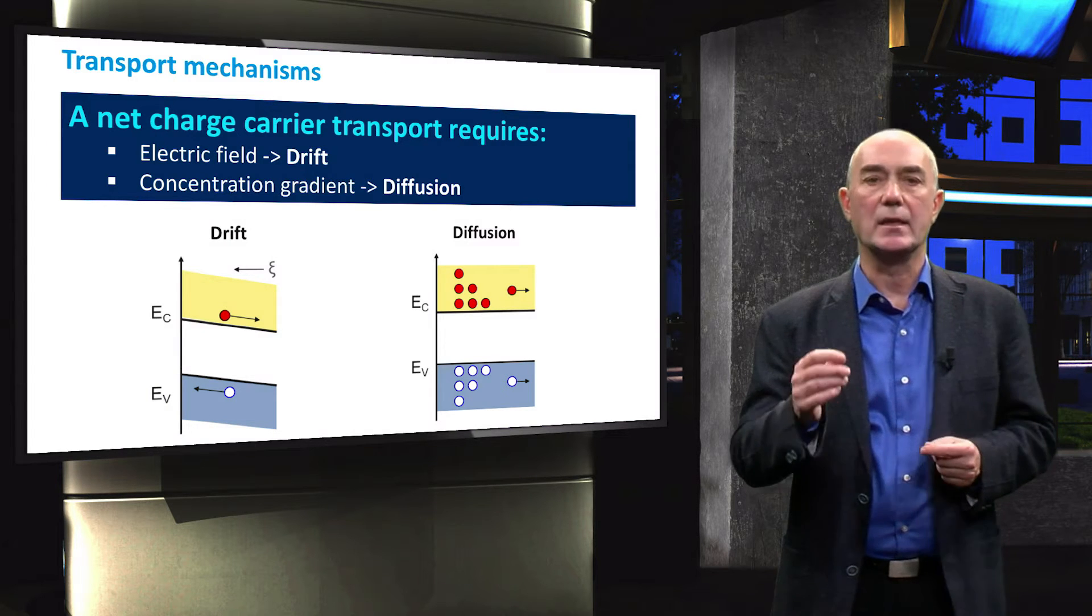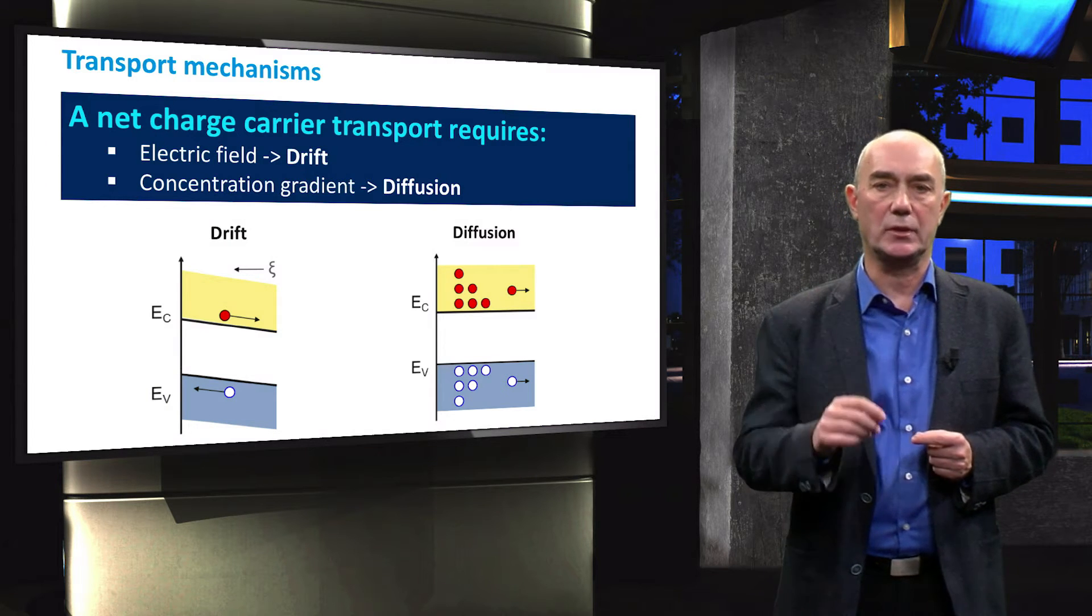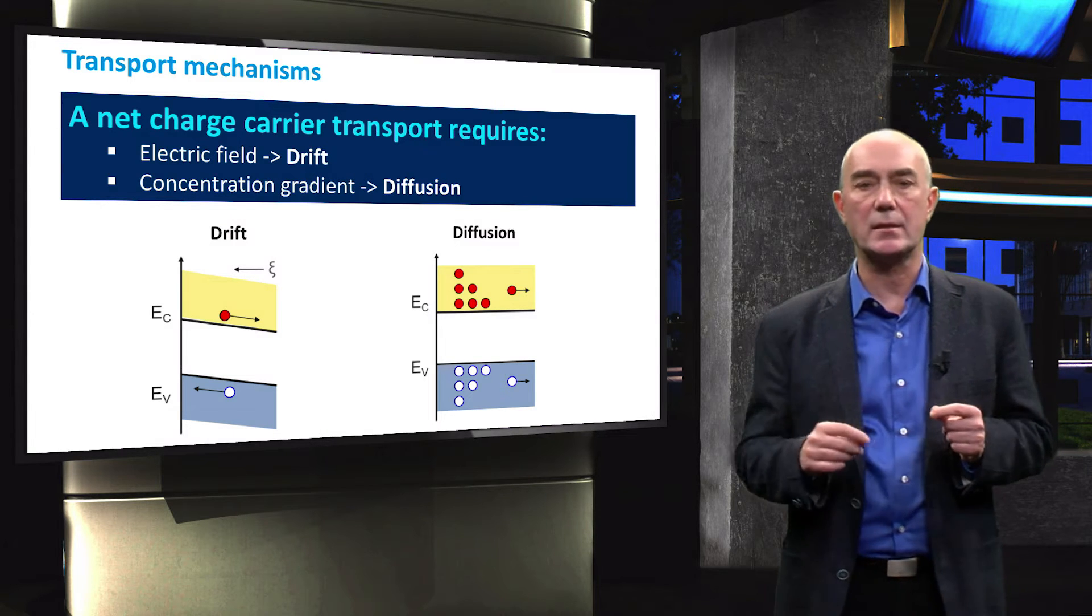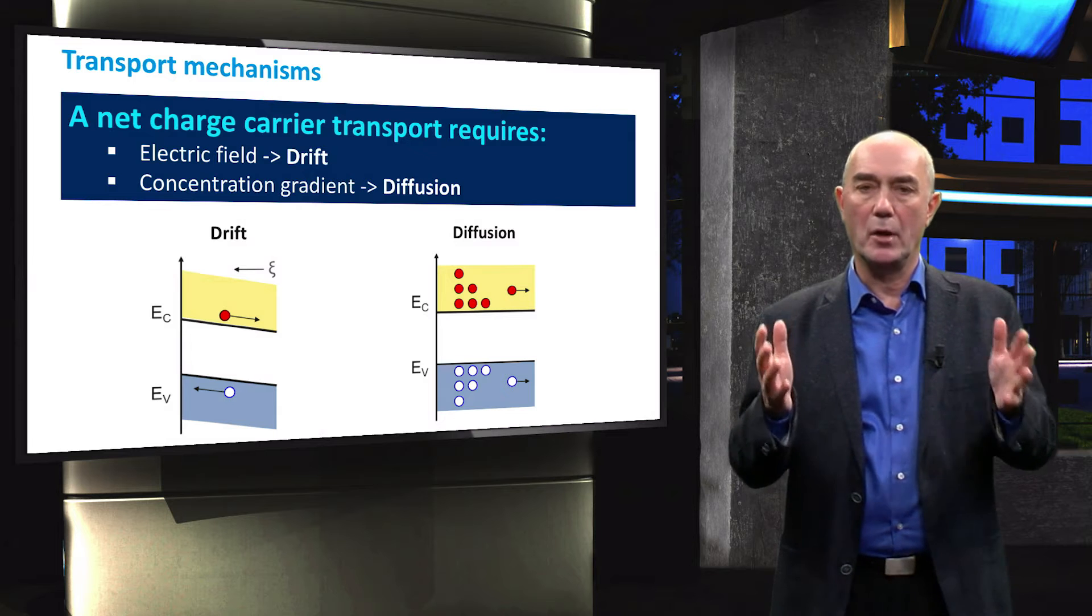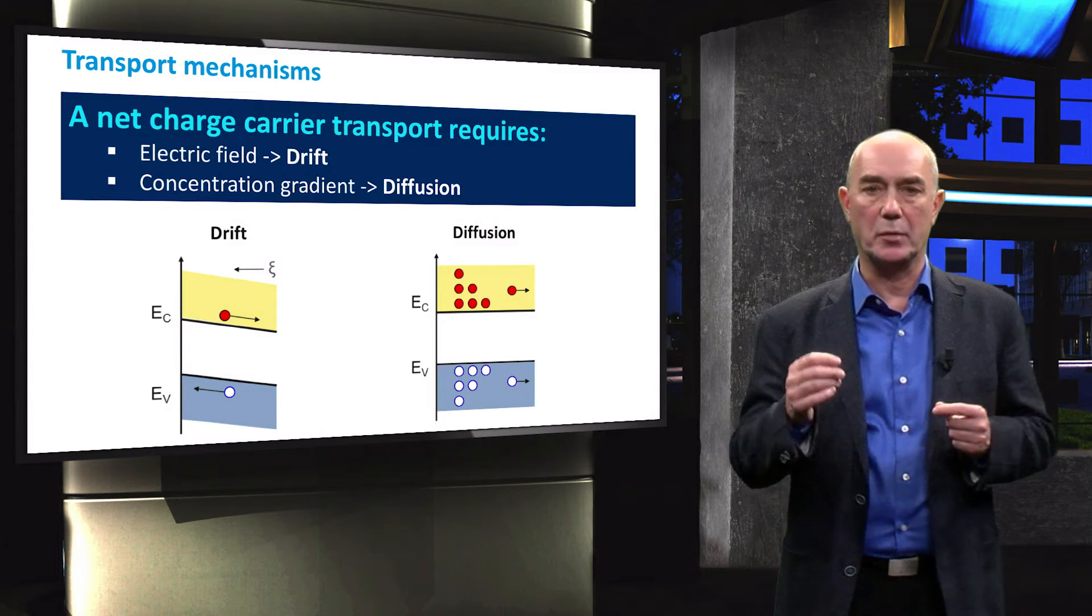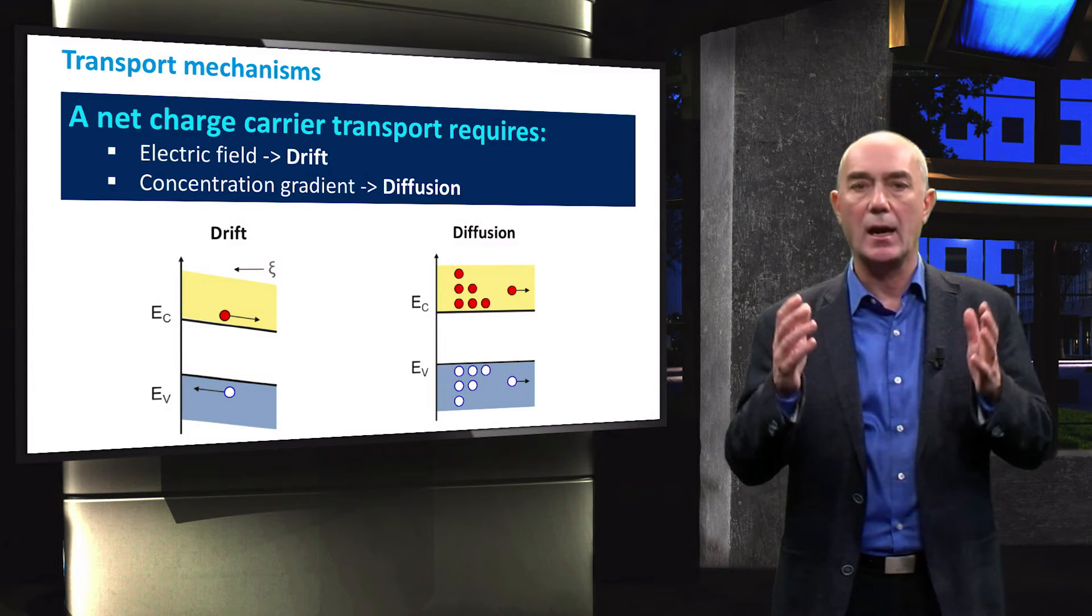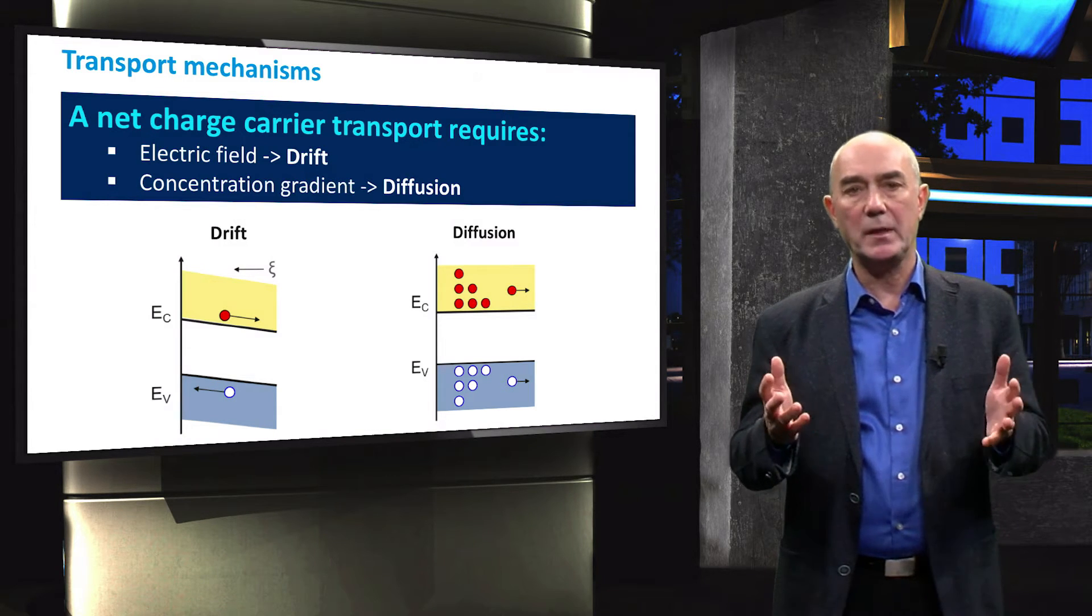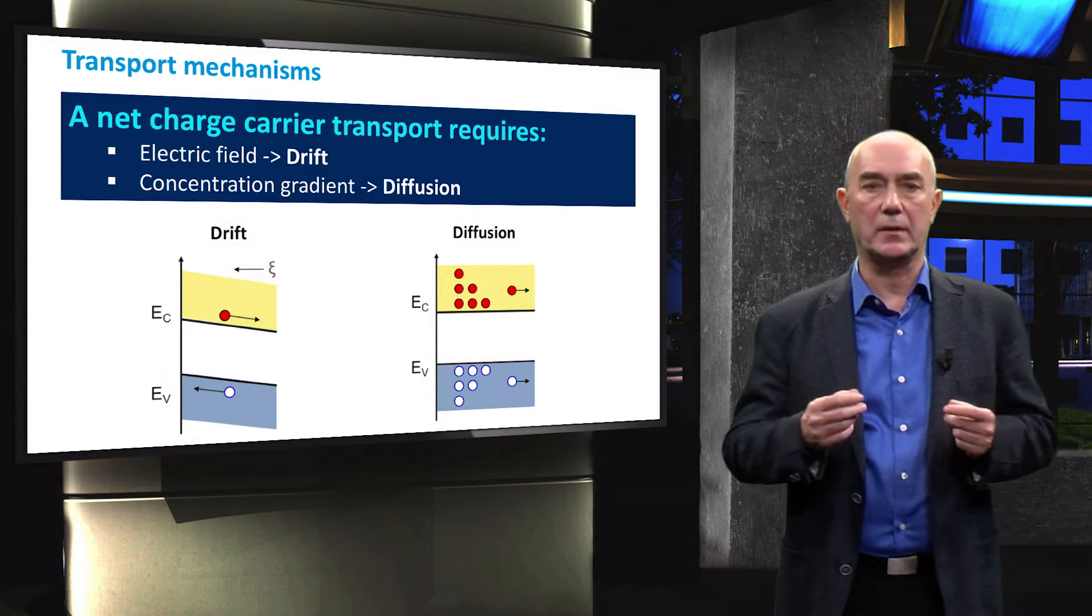Diffusion, on the other hand, is based on thermal motion and is driven by a difference in carrier concentration at different places in device. Both of these processes are important for understanding how charges move around in a solar cell. This topic will conclude our first week of lectures.